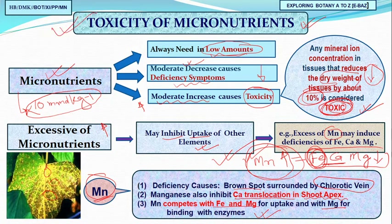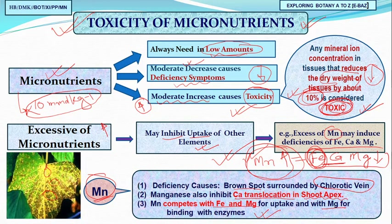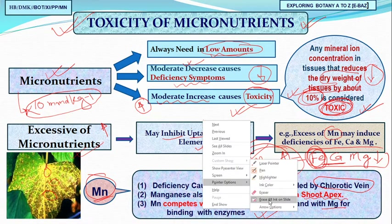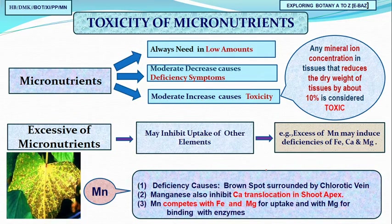To summarize toxicity: a moderate increase in micronutrient concentration causes toxicity; a moderate decrease causes deficiency syndrome. Toxicity is recognized by a 10 percent reduction in body weight. Furthermore, excess of one micronutrient element can induce deficiency of other elements, influencing their uptake or translocation.